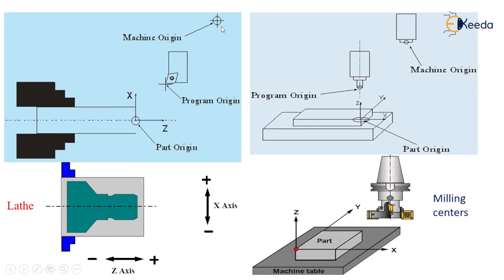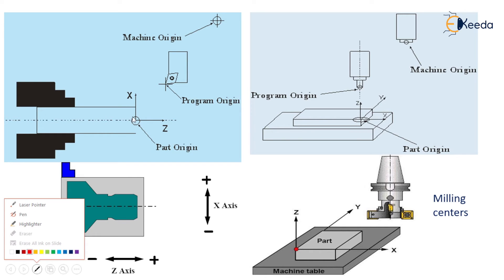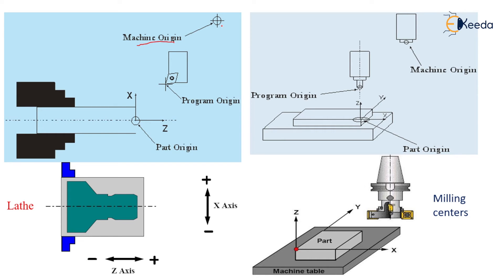If you observe, the machine origin is a fixed zero point in both cases. Program origin is set by the programmer at a particular location where, at the end of the cycle, the tool will move to that position. There is a very small clearance at the program origin in both cases.